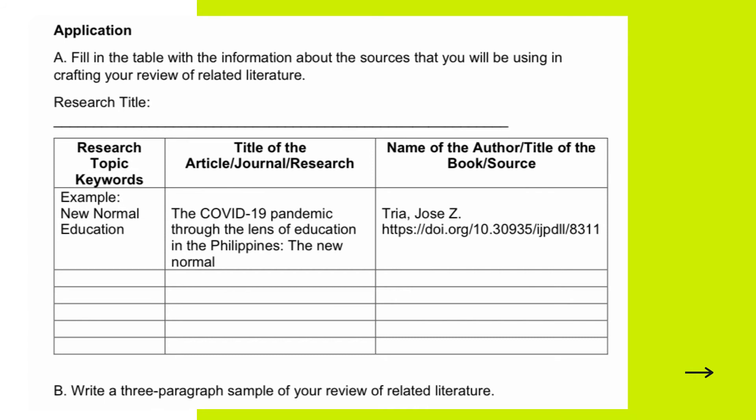For example, my topic keyword or variable is 'new normal education.' I decided to read and include in my review of related literature the study entitled 'The COVID-19 Pandemic Through the Lens of Education in the Philippines: The New Normal.' On the third column, I cited the author of the study, Jose Zitria, and the website where I got his study. The more researches and studies you include in your RRL, the more enriched and grounded your paper will become.